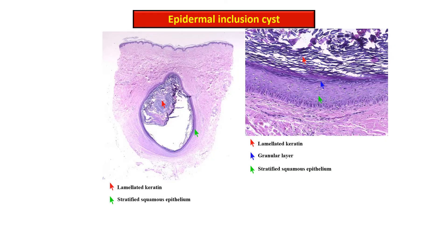Histologically, the epidermal inclusion cyst is characterized by a dermal cyst that is filled with laminated keratin. The cyst wall is lined by a stratified squamous epithelium. On the right, this is the high power view.